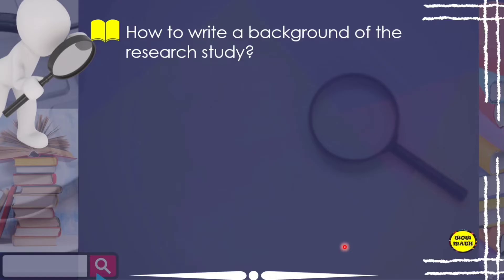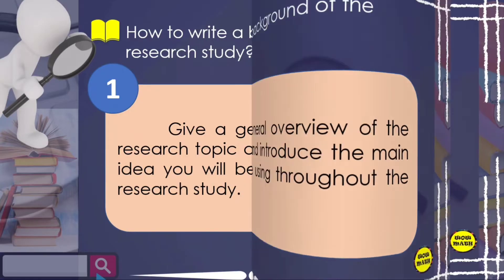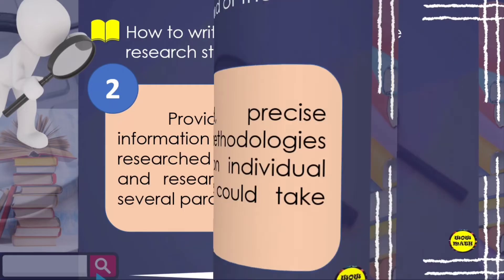So how do you write a background of the study? First, give a general overview of the research topic and introduce the main idea you will be using throughout the research study. Second, provide detailed and precise information about the methodology's research — depending on the individual and research topic, this could take several paragraphs.